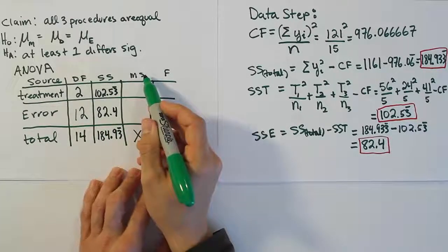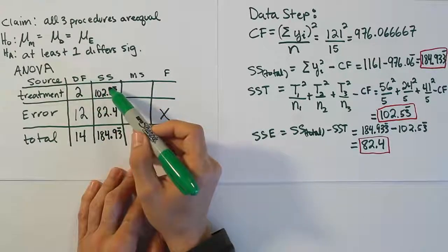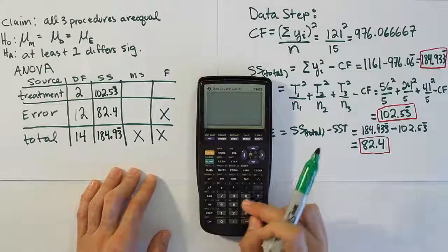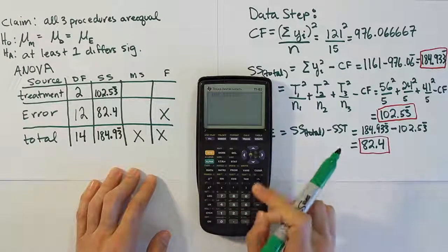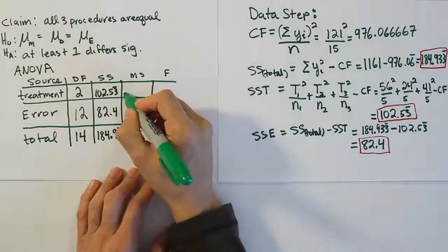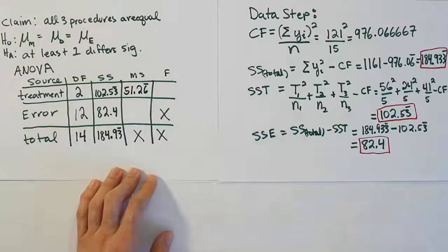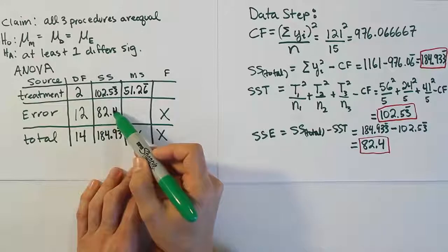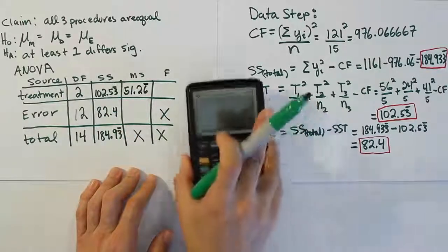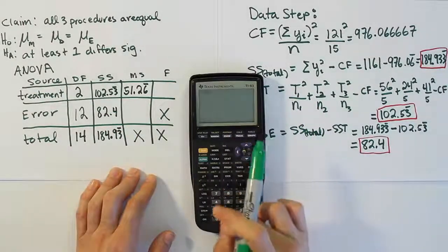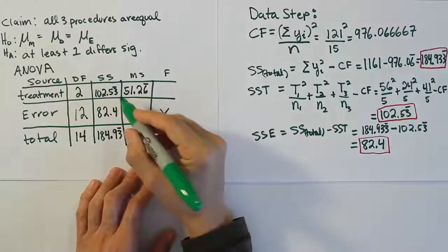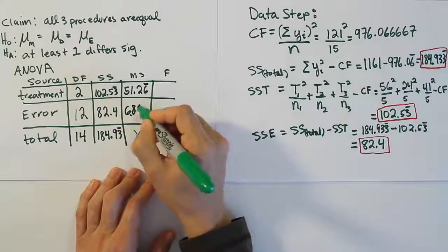To get the mean squares, we divide the sum of squares by the corresponding degrees of freedom. Mean square for treatment (MST) = 102.5333 / 2 = 51.2667 (repeating). Mean square for error (MSE) = 82.4 / 12 = 6.8667 (repeating).